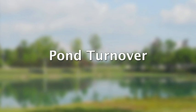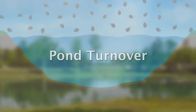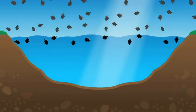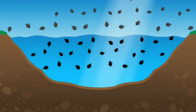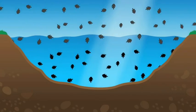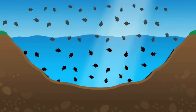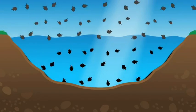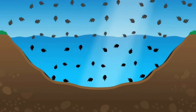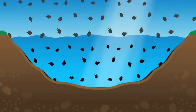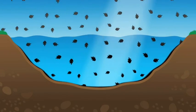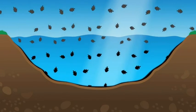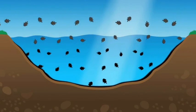Pond turnover is a phenomenon that can occur in ponds prone to receiving biological mass. This biological mass can come from a number of sources, including vegetation, either in pond or from shore. It can include fish or bird feces, as well as droppings from cattle and wild animals.